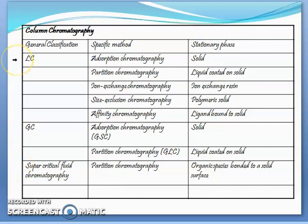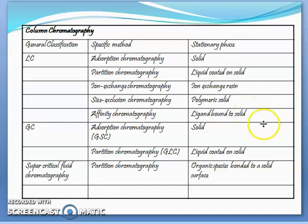In liquid chromatography, the stationary phase may be solid, liquid coated on a solid, ion exchange resin, polymers, or ligands bound to solids. Similarly, in gas chromatography, the stationary phase may be solid or liquid coated on a solid.